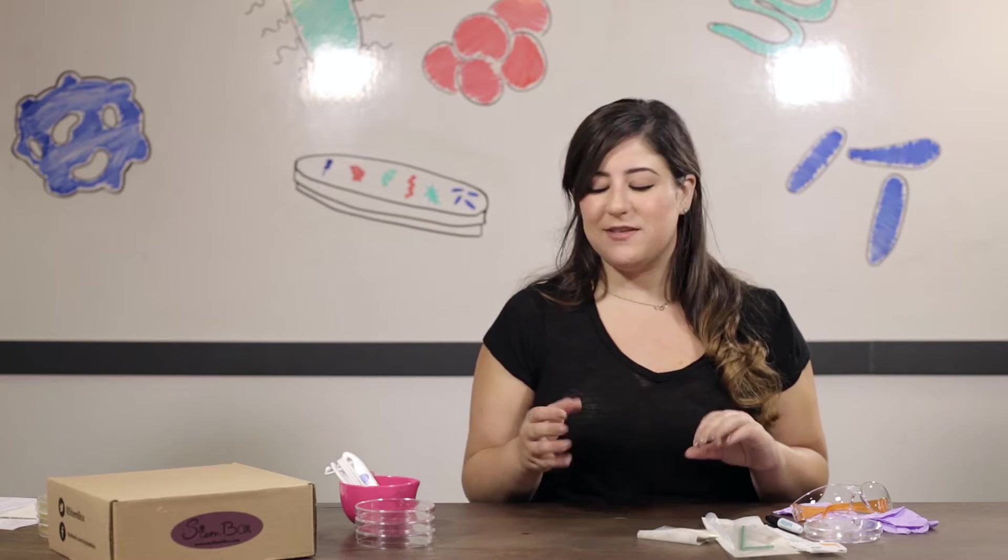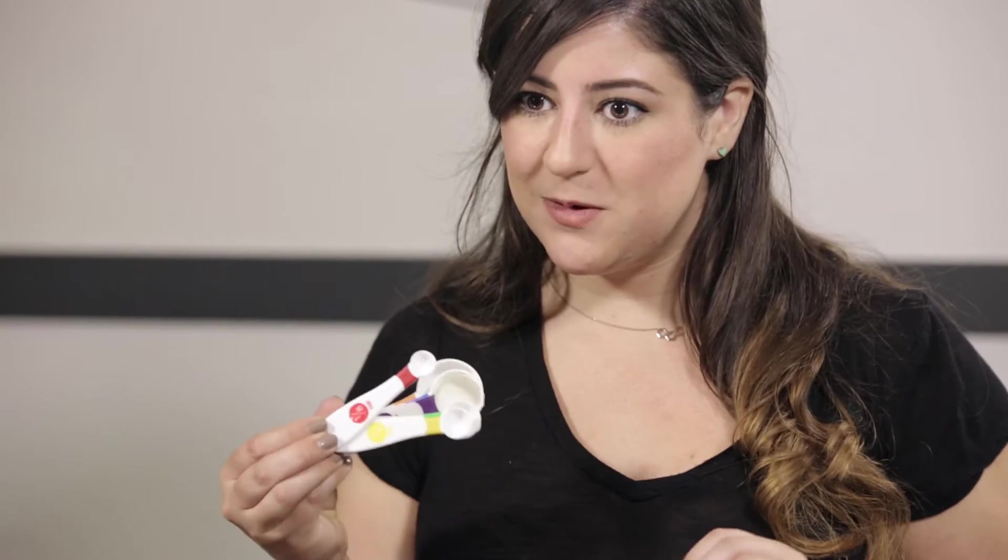What our box does not include however is adult supervision so have an adult nearby to help you with some of these steps. You'll also want measuring spoons, measuring cups, water, and a microwave safe bowl that will easily pour into your plates. It also helps to have some paper towels nearby for easy cleanup. Let's get started!